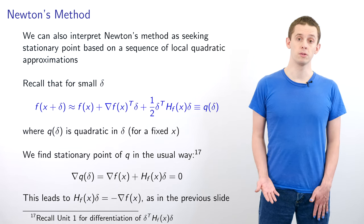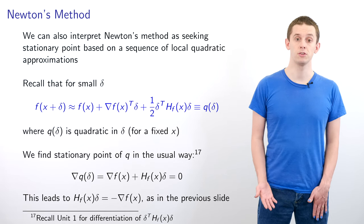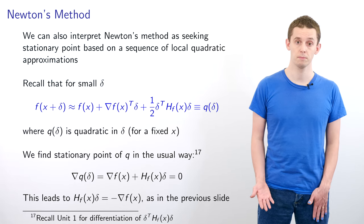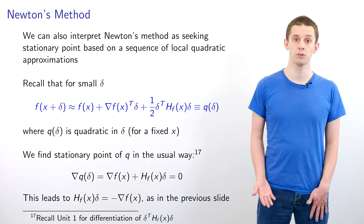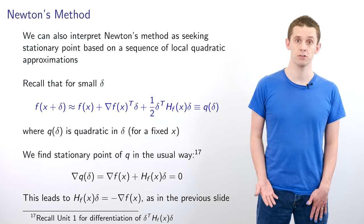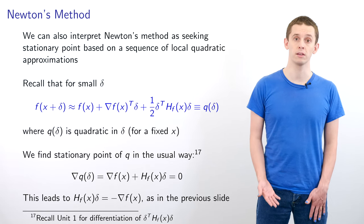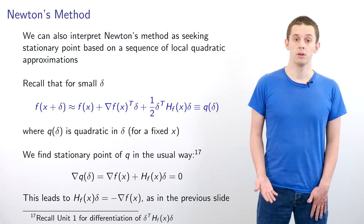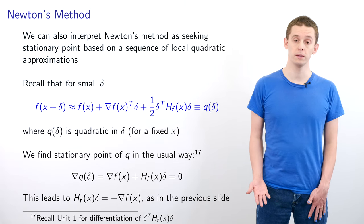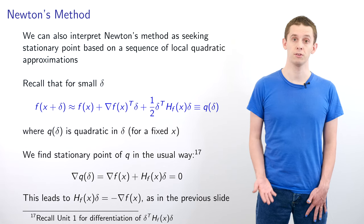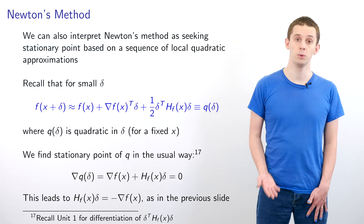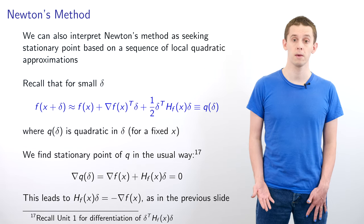We can also interpret Newton's method as seeking a stationary point based on a sequence of local quadratic approximations. Suppose delta is a small vector. We could perform a second-order Taylor series expansion of our function f at x in delta and define this to be a quadratic q of delta. Finding a stationary point of q, we write grad q of delta equal to grad f of x plus H_f(x) times delta, set that equal to zero, and that leads to H_f(x) times delta equals minus grad f of x — exactly matching the step in the Newton algorithm.